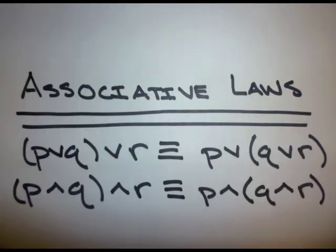The associative laws: P or (Q or R) is logically equivalent to (P or Q) or R. P and (Q and R) is logically equivalent to (P and Q) and R.